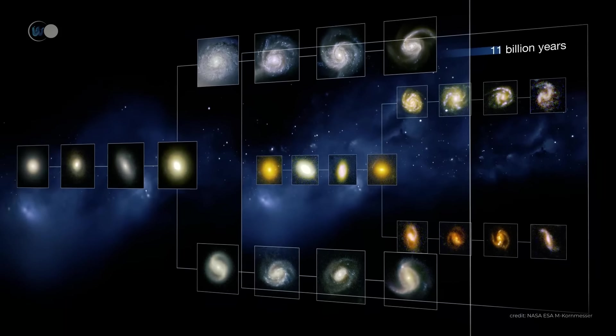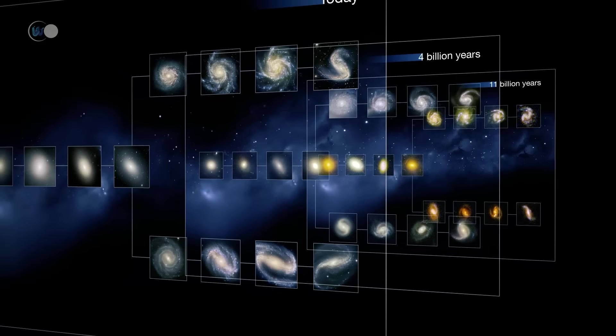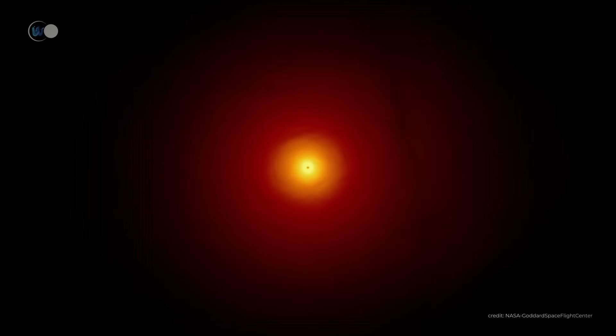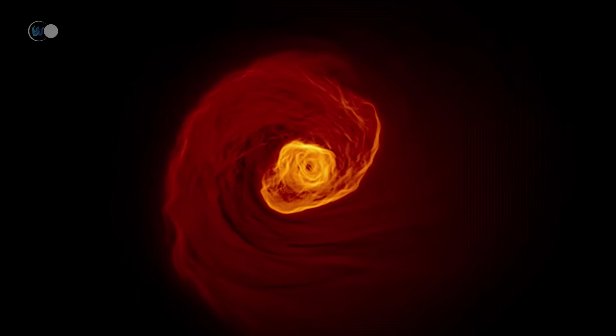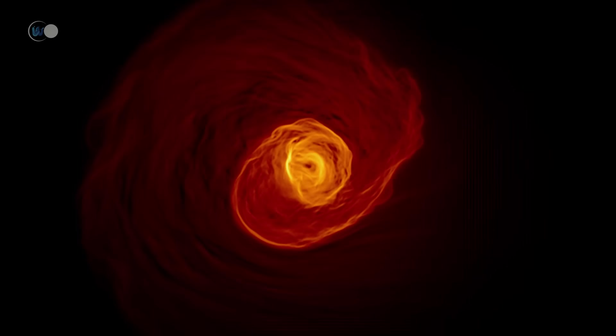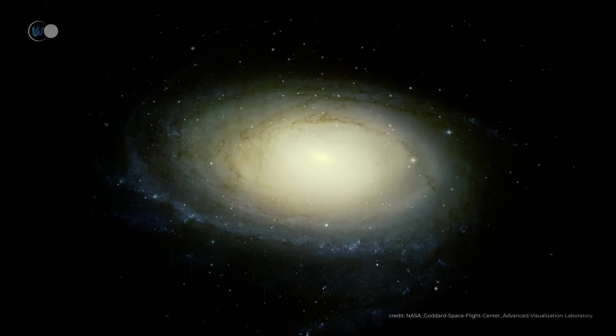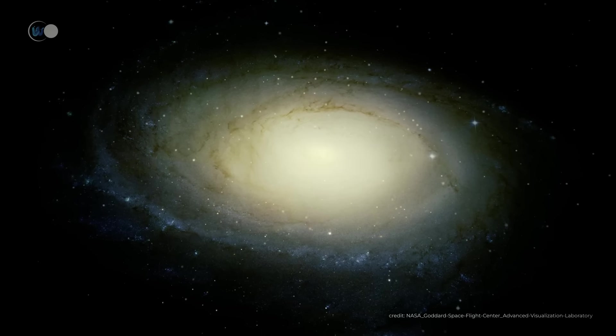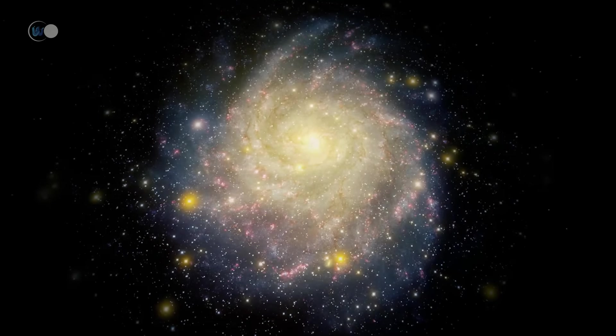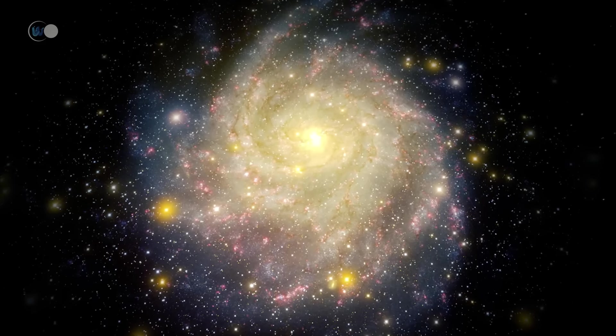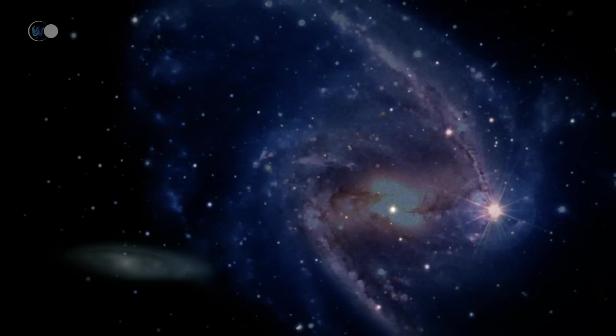The first galaxies in the universe were far less massive than those we find today. According to current models, primitive galaxies gradually grew in size. How long a galaxy took to form is still unclear and depends on many factors. Recent discoveries by the James Webb have revealed the formation of a very massive population of galaxies, produced between 500 and 700 million years after the Big Bang.